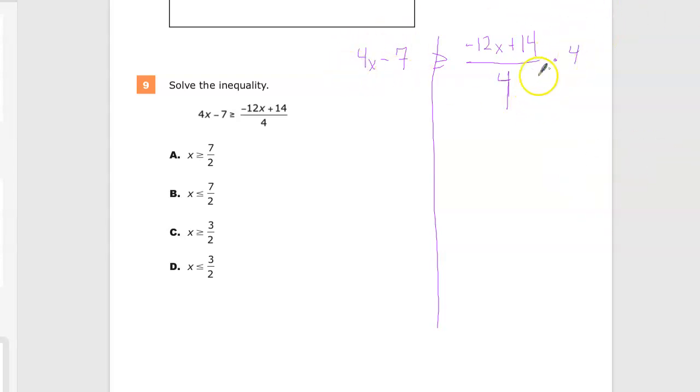So in order to get rid of division, I need to multiply. So I can't just do it to this one side over here. That eliminates this. But since I did it to this side multiplied by 4, I have to multiply this side by 4 as well.